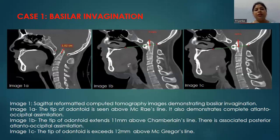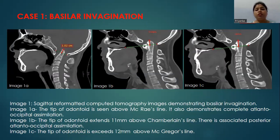This case demonstrates basilar invagination. In image A, the tip of the odontoid is seen above the McGrae line. In image B, the tip is above the Chamberlain line, 11 mm above the Chamberlain line. And in image C, it is 12 mm above the McGregor line.